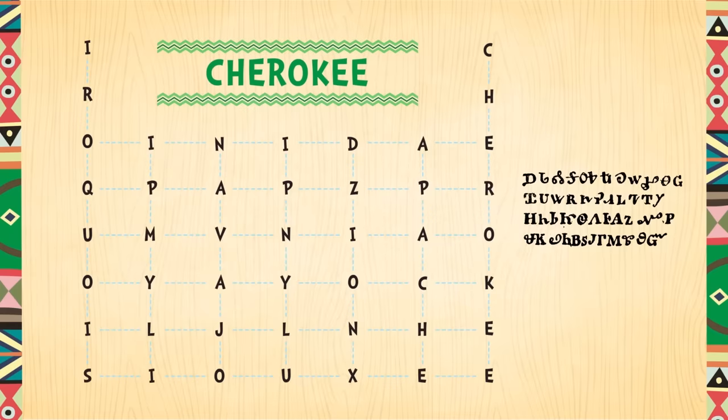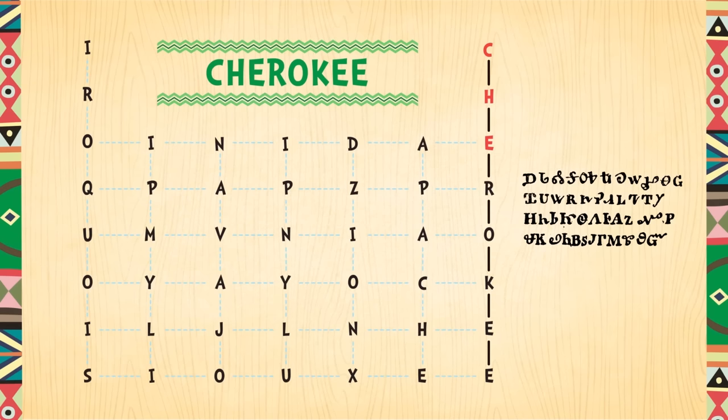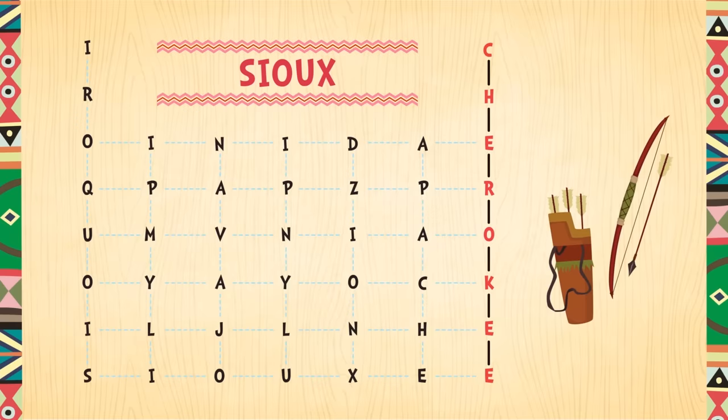First, let's find the name Cherokee. It begins with the letter C. Cherokee means 'people with another language.' Do you see it in the word search? There it is — C H E R O K E E. Awesome job! Now let's look for Sioux.